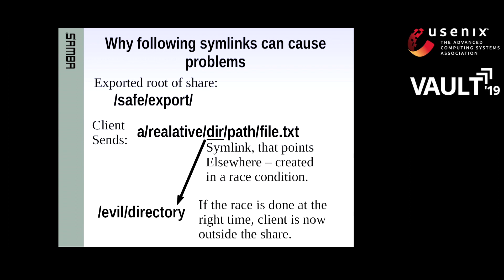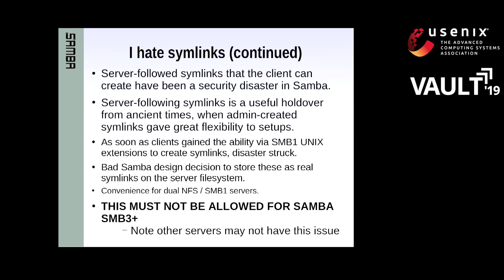Symlinks are a disaster. The reason I'm disallowing server-followed symlinks over SMB3 is that Jan Horn at Google — who later discovered Meltdown and Spectre — when he first started as a young engineer, he cut his teeth beating the crap out of Samba. He found race conditions in our symlink handling code which took over three months to fix. That allowed you to escape from the root of a share using the SMB1 POSIX extensions to create a server-followed symlink. So we're not storing them in standard filesystem symlinks — we're going to store them in EAs with a special tag.